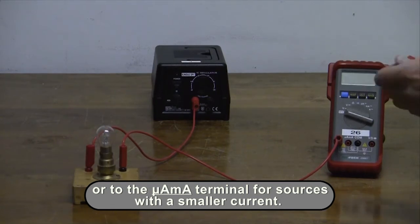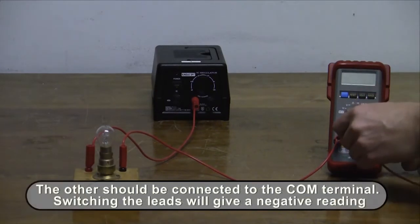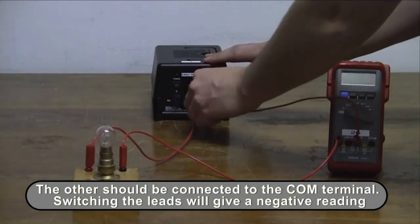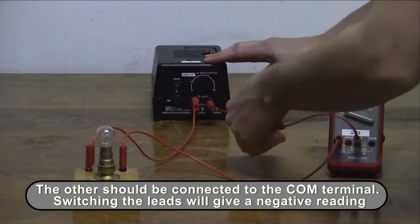In this example, the current is in the ampere range. The other lead should be connected to the comm terminal. Switching the two leads around will result in a negative current reading.